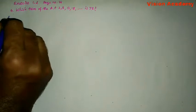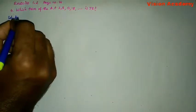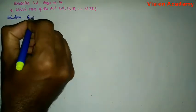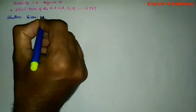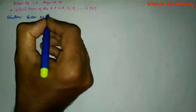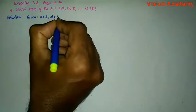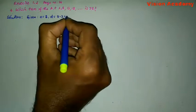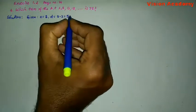Let us find the solution for the given problem. Let us write first, given A is equal to the first term is 3. Next, common difference D is equal to 8 minus 3, which is equal to 5.